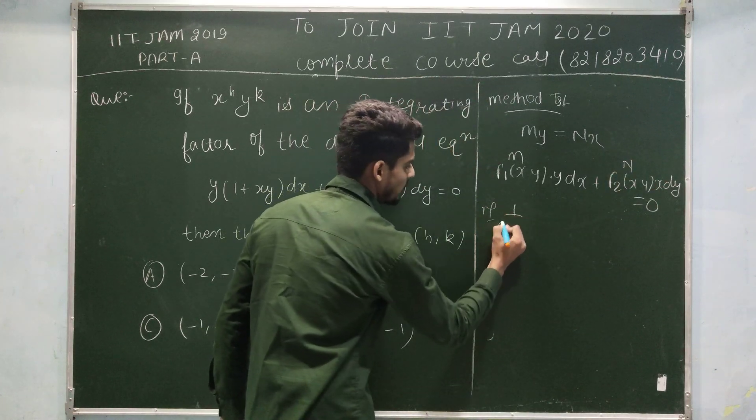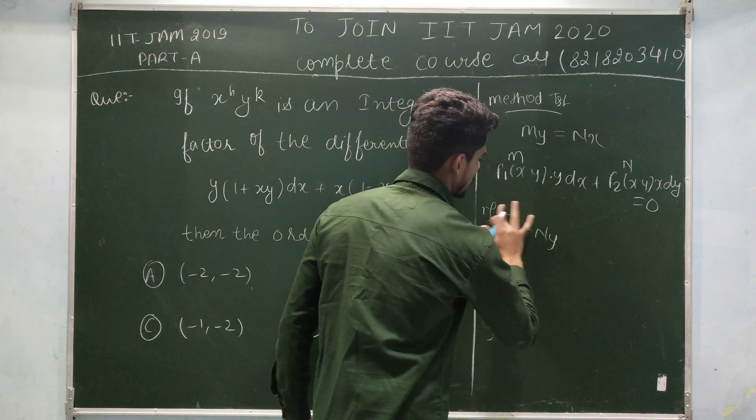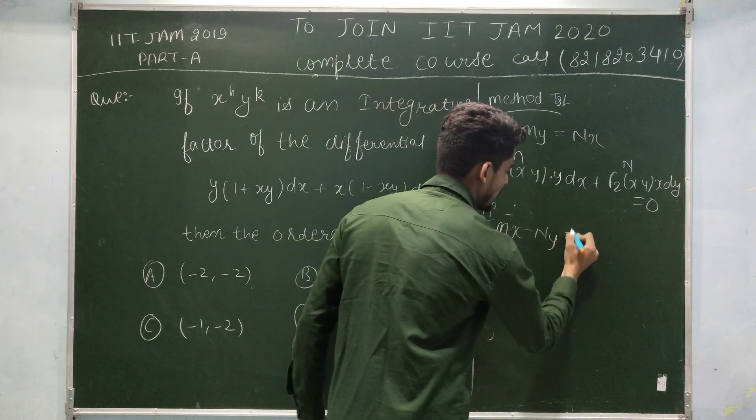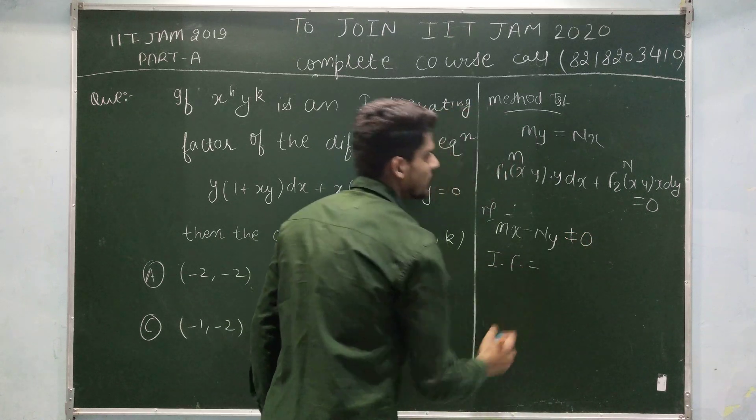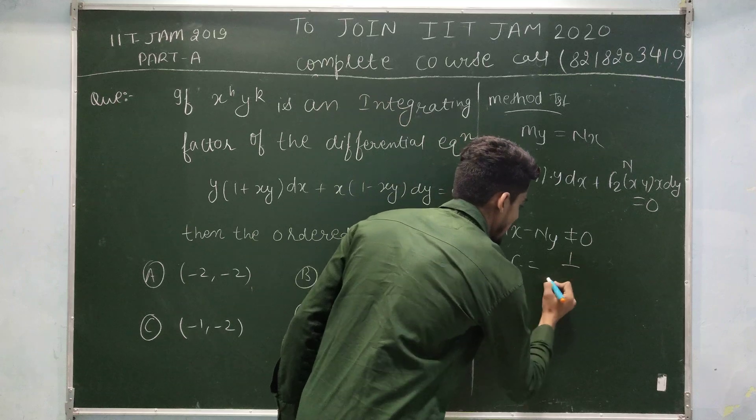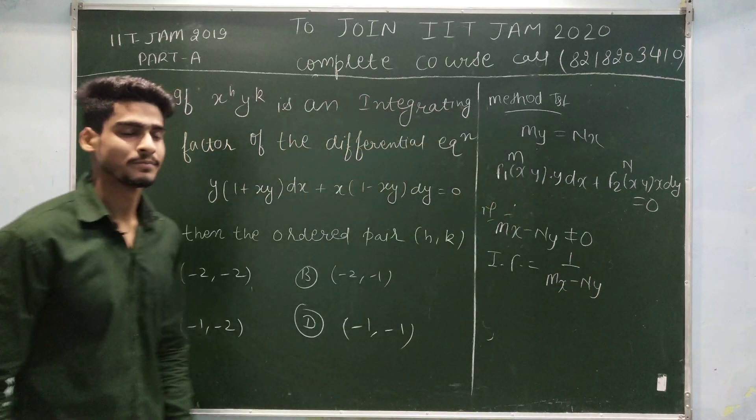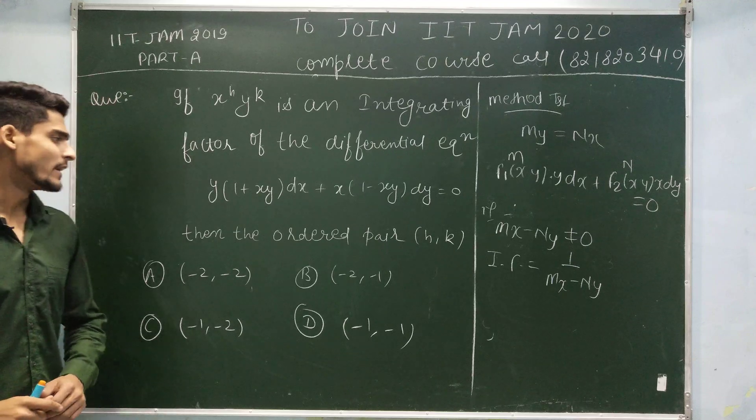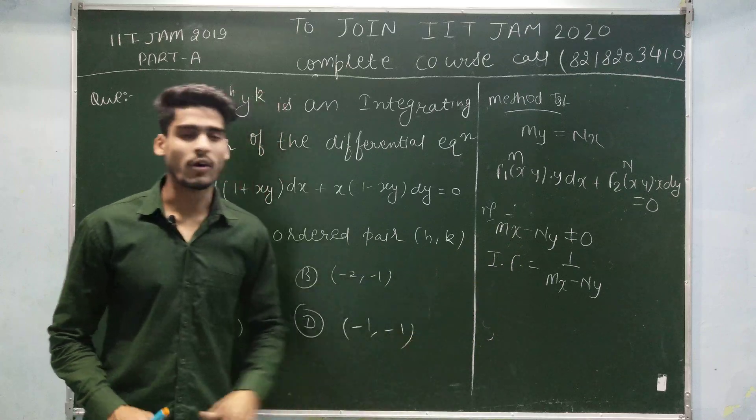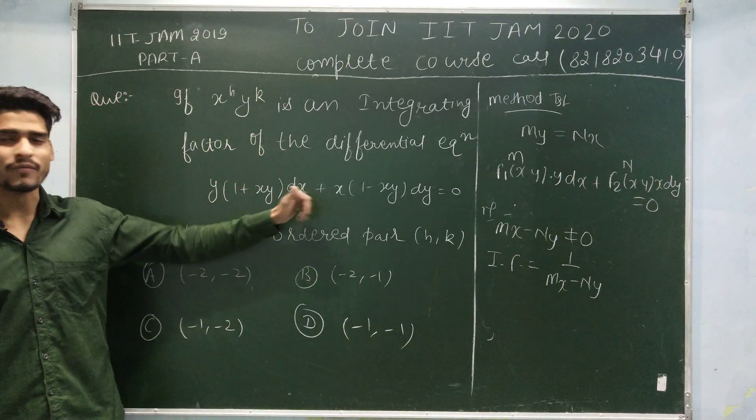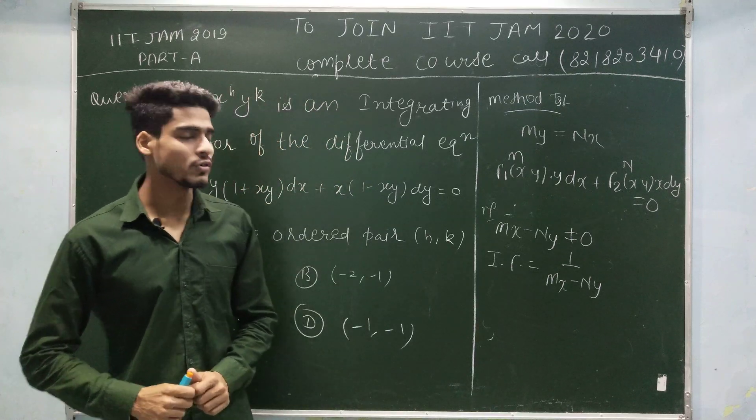if mx minus ny is non-zero, then the integrating factor of the differential equation is 1 by (mx minus ny). And we can easily see this is a differential equation of such type. Then the integrating factor of this differential equation is 1 by (mx minus ny). But first we have to see that if mx minus ny is 0 or not.